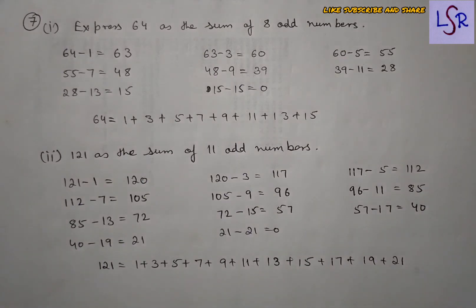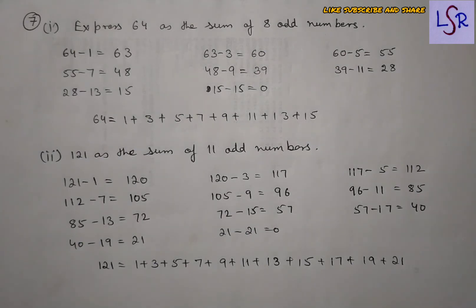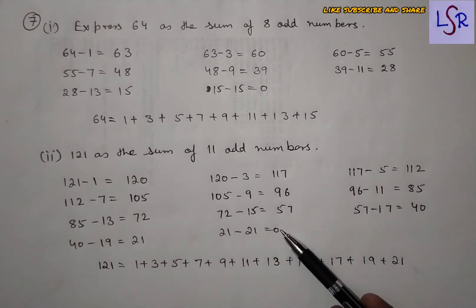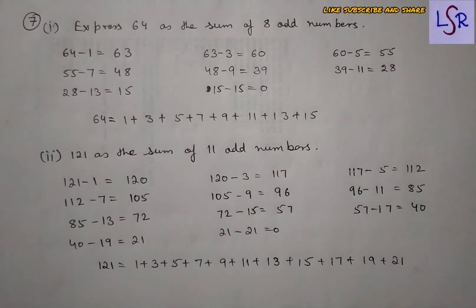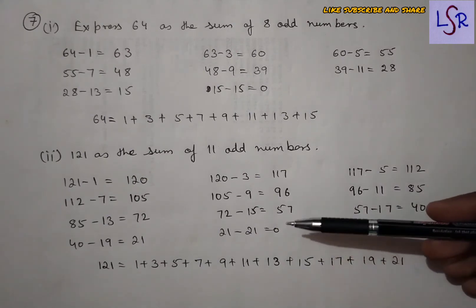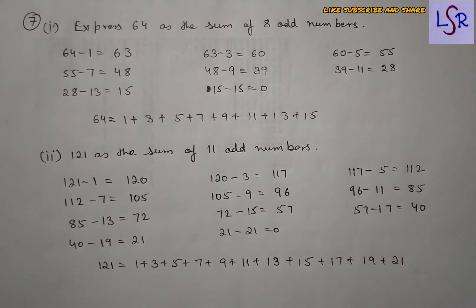This is also a way to check whether a number is a perfect square using the repeated subtraction method. If we don't reach 0 at the end, then the number is not a perfect square. If we do reach 0, then it is a perfect square. That's all from this video. Thank you.